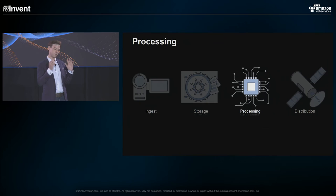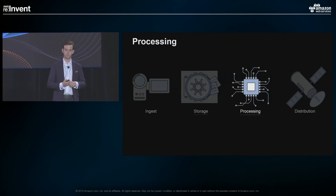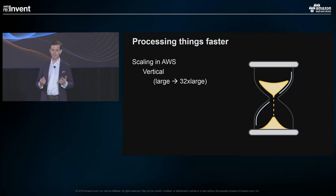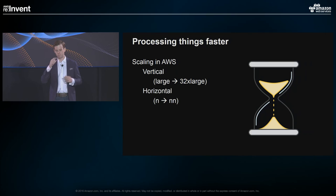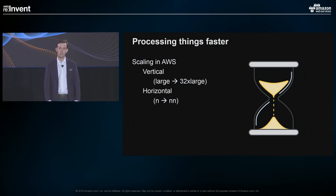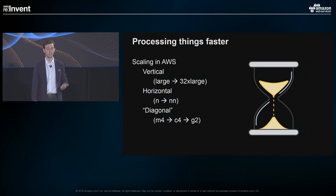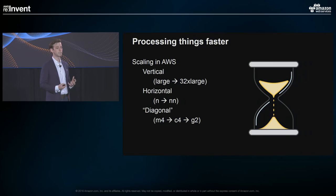Now we've got our assets ingested and stored. We need to take them from that quality level and start to process them. As with anything in cloud computing, we can apply different approaches to scaling. First, you can change the physical size — scale up. Then you can add more of them — horizontal scaling from N to N. But something we sometimes forget about is diagonal scaling: where you effectively change the type of your instance to be more specialized.